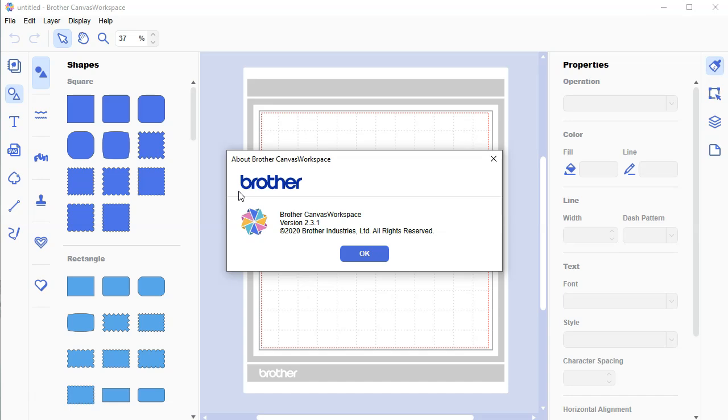If your version does not look like this, you are probably using the browser based version or the web based version of Canvas workspace, which is fine and it is a great version. It just does not allow you to access the fonts on your computer. Therefore, please use the link in the description below to download and install the version I am using.